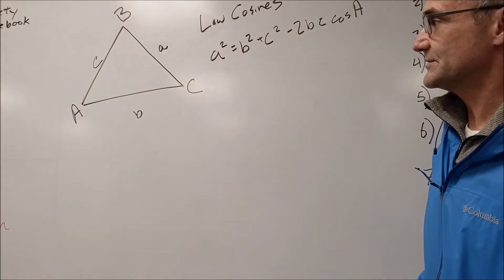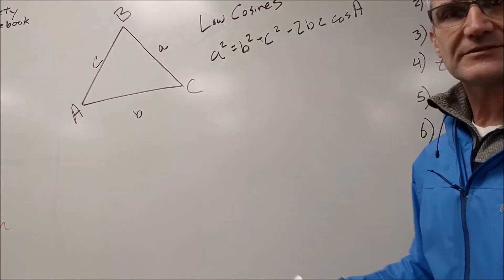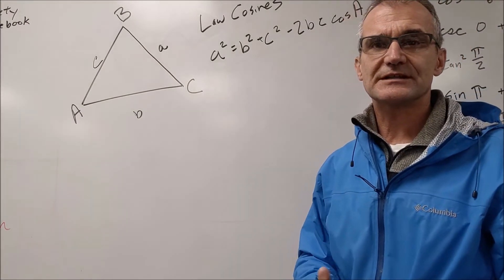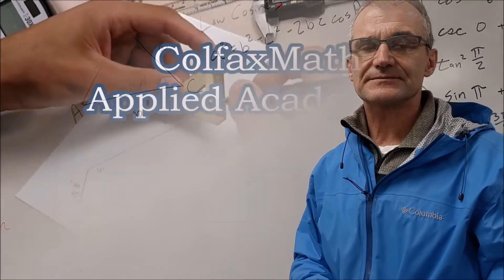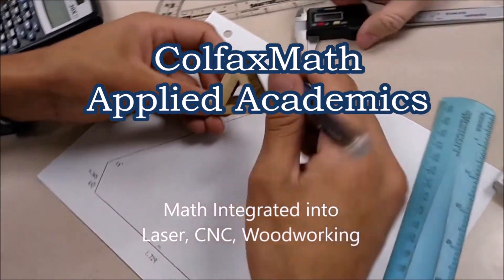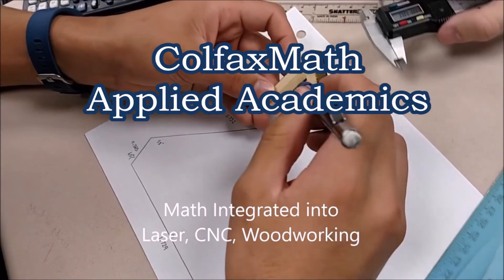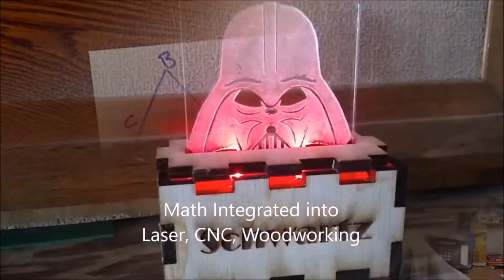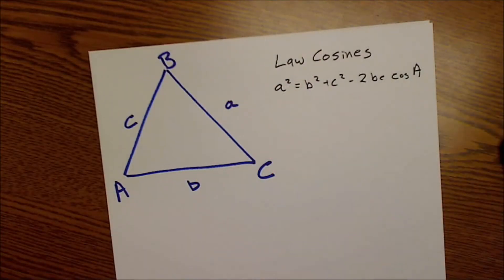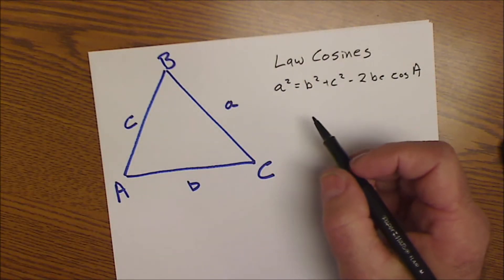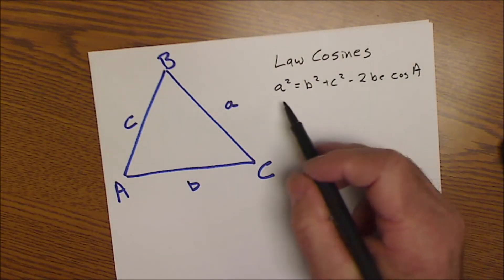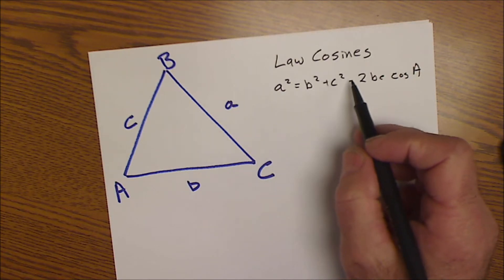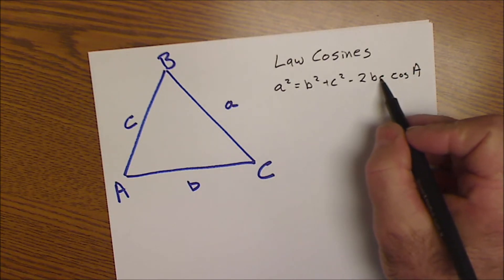Let's look at the first case. Let's go over to my desk and put the camera over my shoulder so we can look at that. So here we are at my desk. This is the law of cosines: a² = b² + c² − 2bc·cos(A).